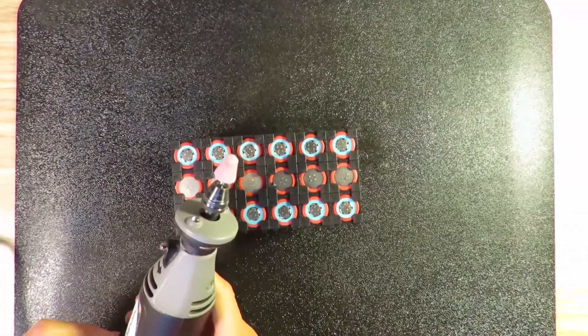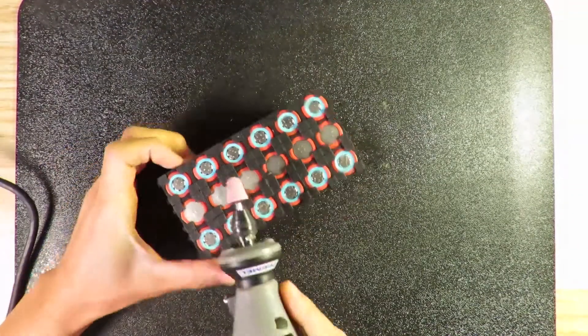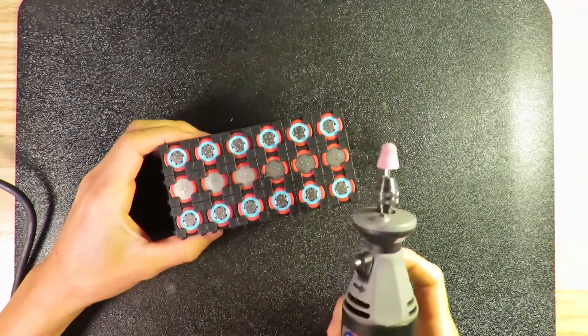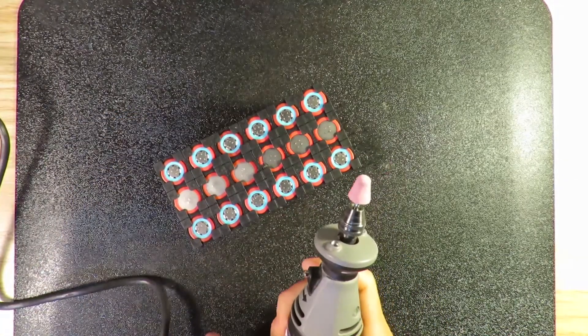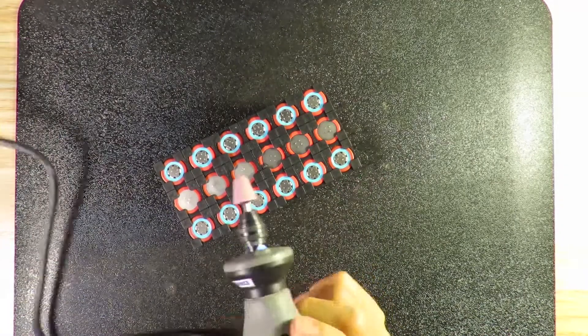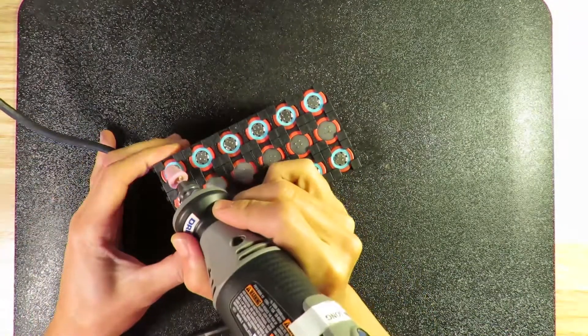The next step, I'm just going to use the high speed tool to make the clean contact for the positive and the negative. This step is pretty boring, you can just fast-forward.